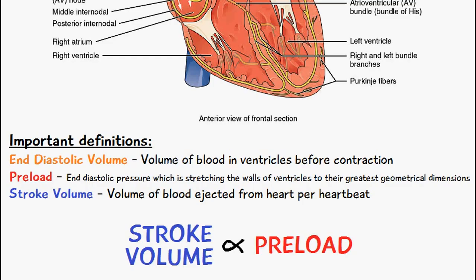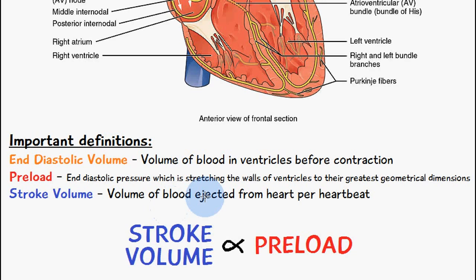Stroke volume is the volume of blood ejected from the heart per heartbeat, as mentioned in a previous video. Stroke volume and preload are directly proportional to each other, meaning the volume of blood ejected from the heart per heartbeat is proportional to the pressure stretching the walls of the ventricles.